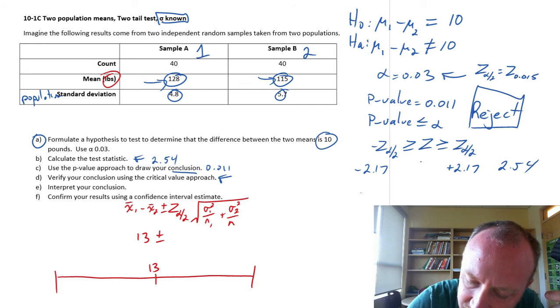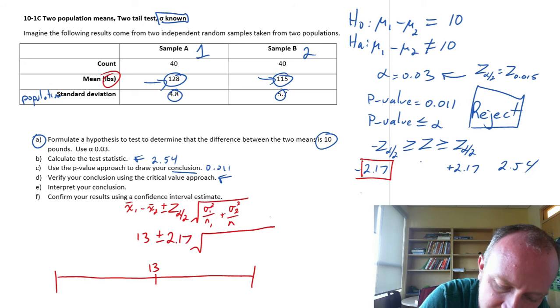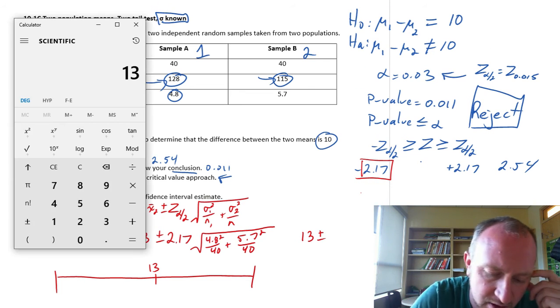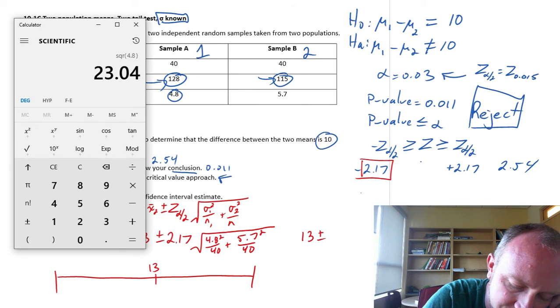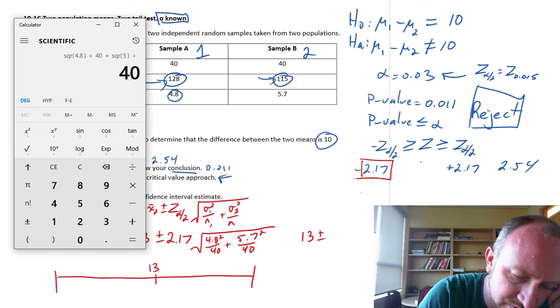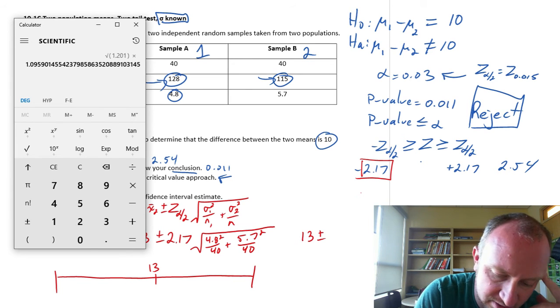So 13 plus or minus. Here the critical value, we've already looked that up. That was plus or minus 2.17 times the square root of 4.8 squared over 40, plus 5.7 squared divided by 40. So that's going to be 13 plus or minus. Let me just get that margin of error. 4.8 squared divided by 40, plus 5.7 squared over 40, square root times that by our critical value.